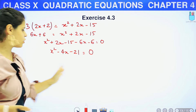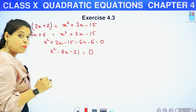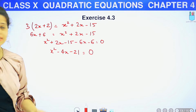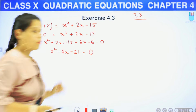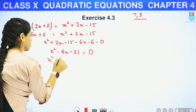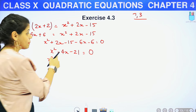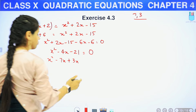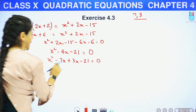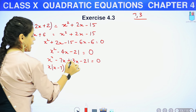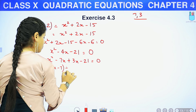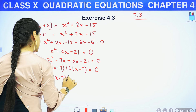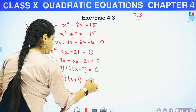अब हमें बस middle term split करना है. 21 के ऐसे factors चाहिए जिनको multiply करने पर 21 आए और subtract करने पर 4 आए. Simple — 7 और 3: 7 × 3 = 21, और 7 - 3 = 4. Correct! So: X² - 7X + 3X - 21 = 0. X common: X(X - 7) + 3(X - 7) = 0. So (X - 7)(X + 3) = 0.